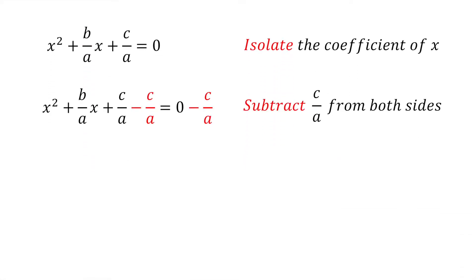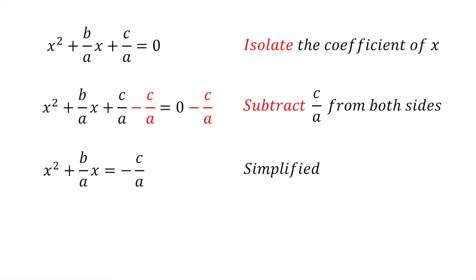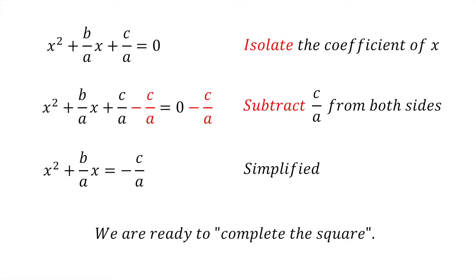We now subtract c divided by a from both sides of the equation to obtain x squared plus (b divided by a)x equals negative c divided by a. We are now ready for the next step, which is called completing the square.